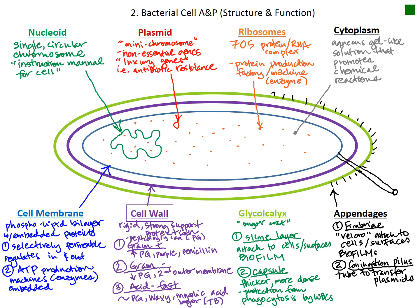The last type of appendage is the flagellum, or flagella. Just like in human cells, this is used for movement or motility. Some cells will have just one flagellum while others may have many. These will be some of the major structures of the bacterial cell.